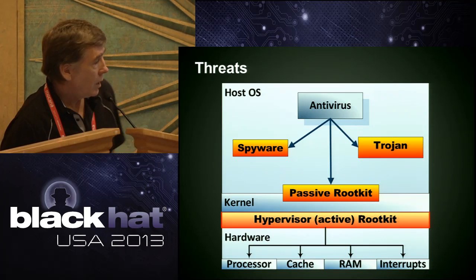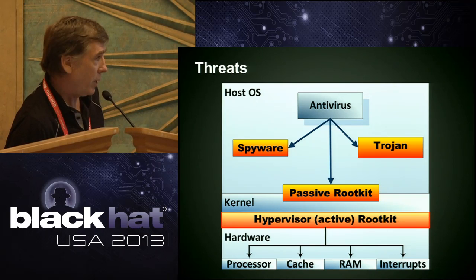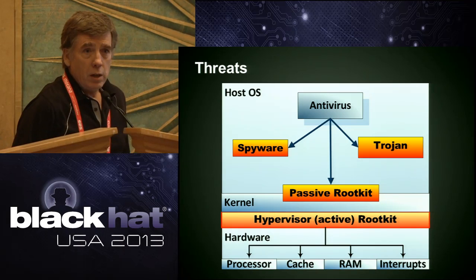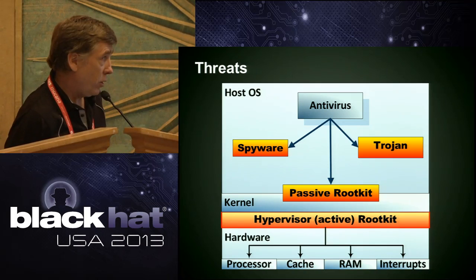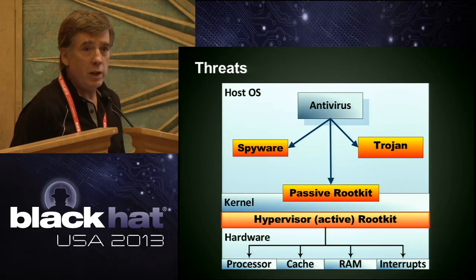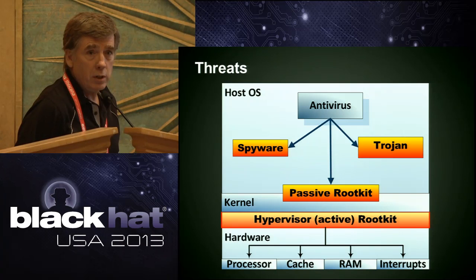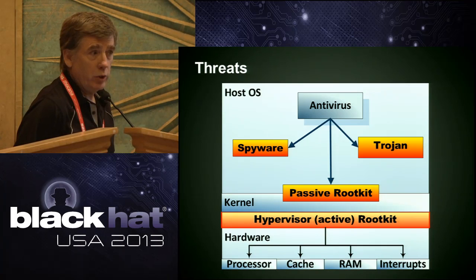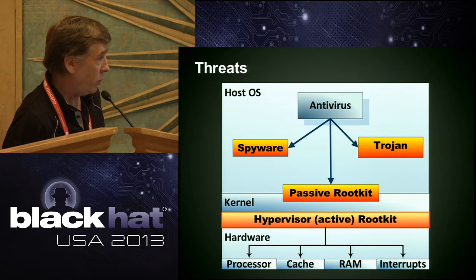Another threat is the hypervisor active rootkit. It's a little different than the passive rootkit. The passive rootkit may have root access but it's not able to hide under the operating system. The active, hypervisor-based rootkit might take control of hardware and can hide effectively by running the host operating system and antivirus software in a virtual machine, which means the antivirus software can't detect that active rootkit. The active rootkit can hide by using interrupts or page tables to move itself in and out of memory where the antivirus software cannot even see it.